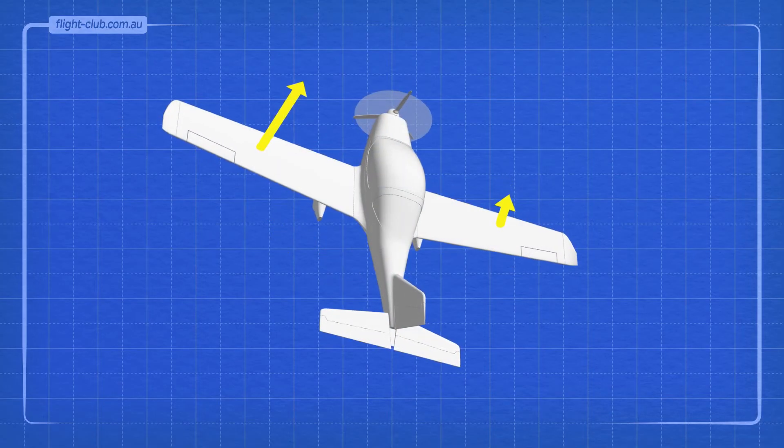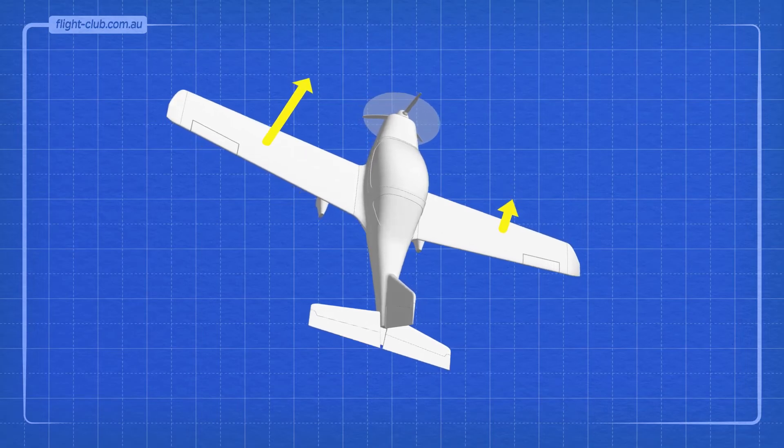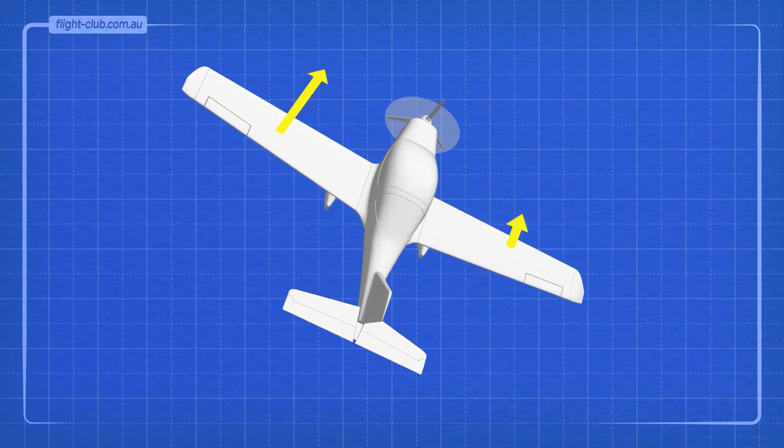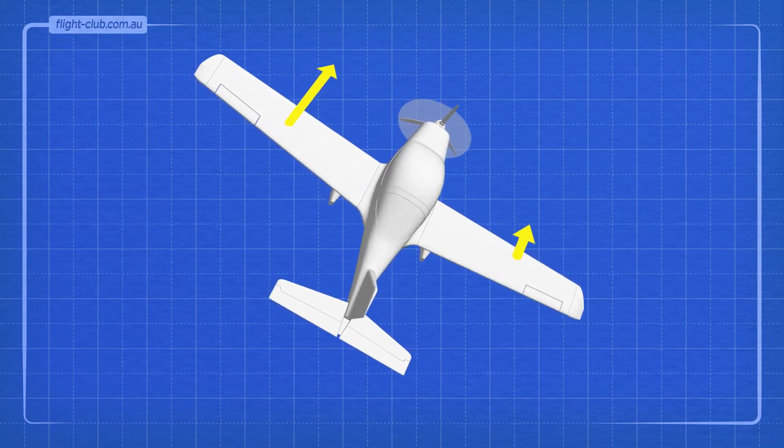This situation of unbalanced lift tends to increase as the aeroplane yaws towards the lower right wing. This causes the autorotation.